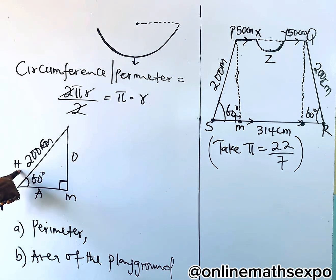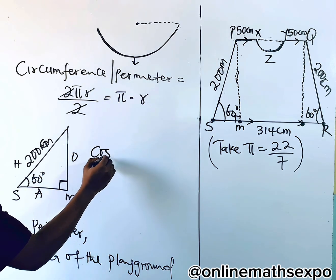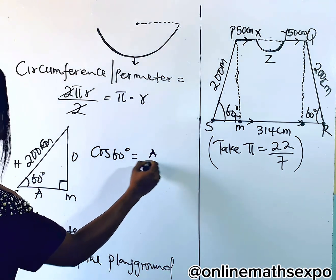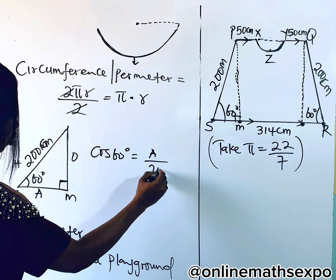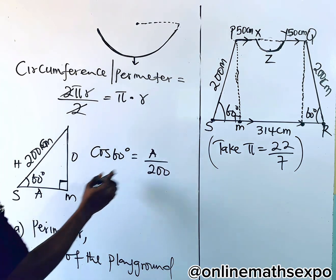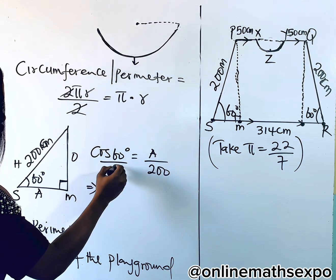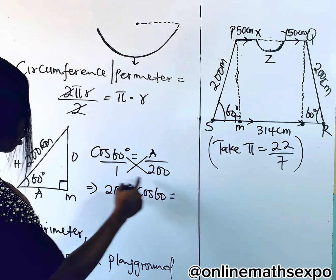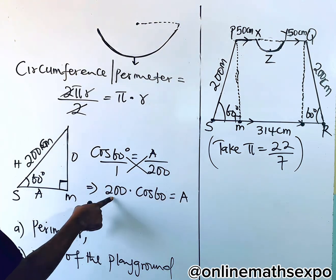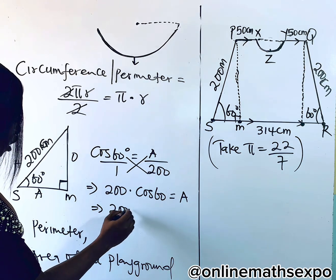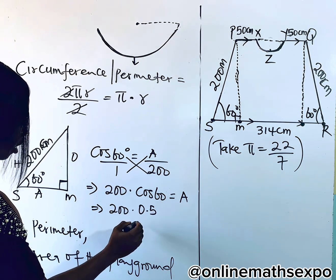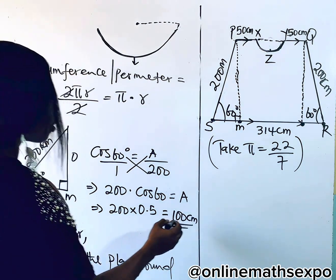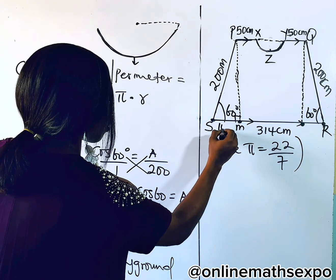For adjacent and hypotenuse, use cosine. So we have cos 60° = adjacent divided by hypotenuse. To get the adjacent, we cross multiply: 200 multiplied by cos 60. Cos 60 is 0.5. So when you multiply this, it gives 100 centimeters. This particular length is 100 centimeters.